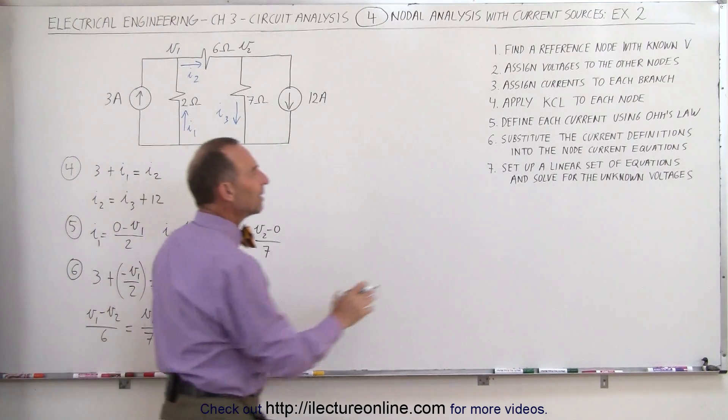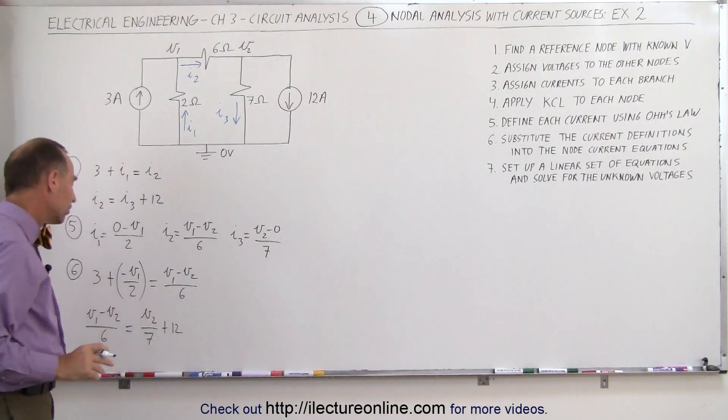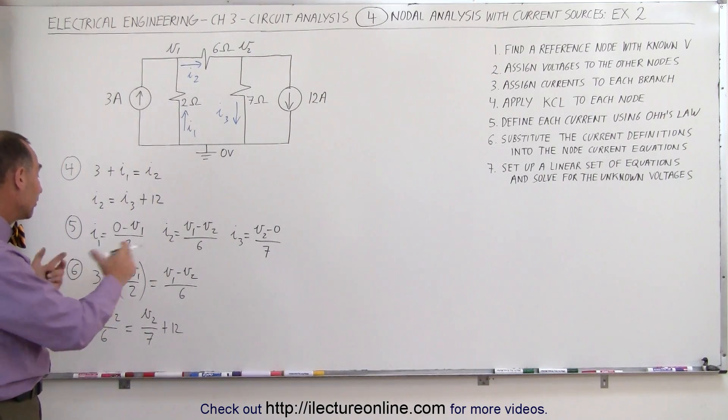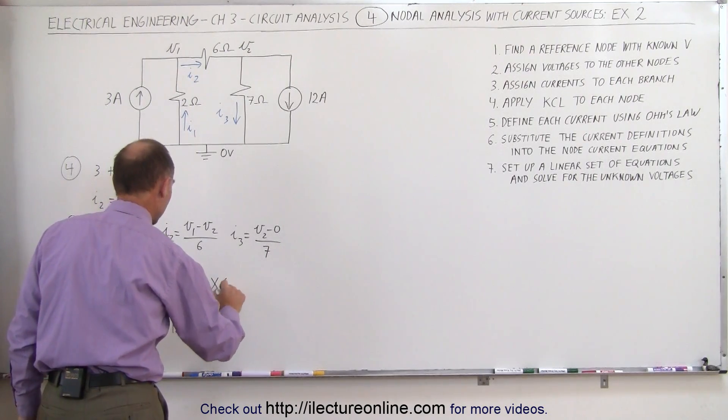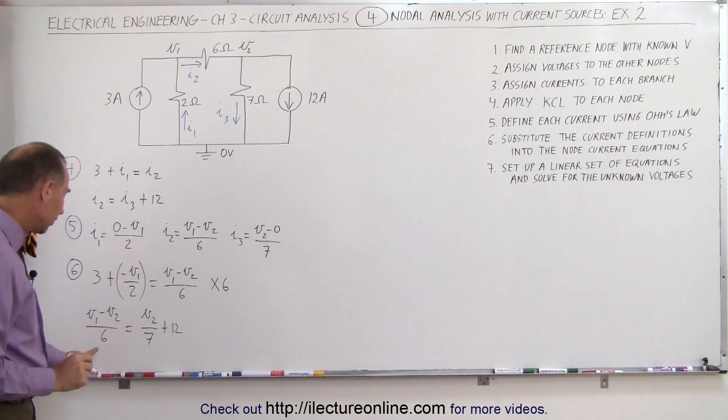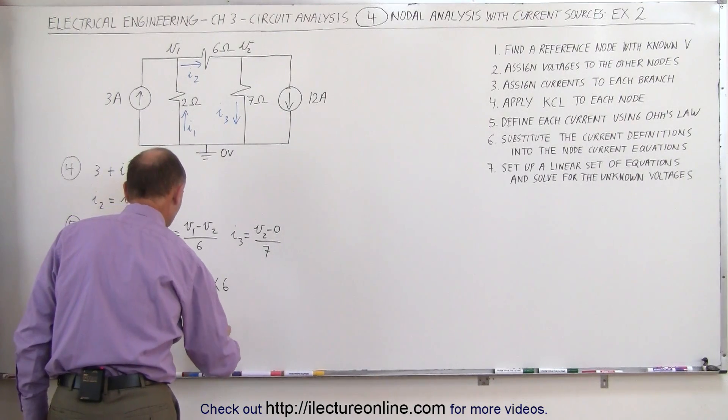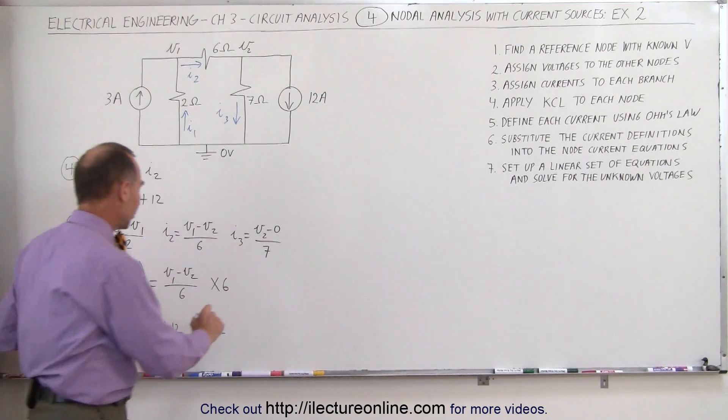The next step would be to set up a linear set of equations, but to do that we want to simplify these two equations. We can do that by multiplying the left and the right side by a number to get rid of the denominators. In the case of the first equation, we can multiply this times 6. And the second equation, the common denominator here would be 42, so we're going to multiply the left and the right side equation by 42. When we do that, we get the following. Let's write that up here.